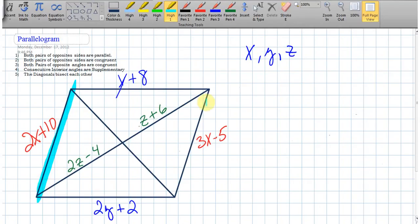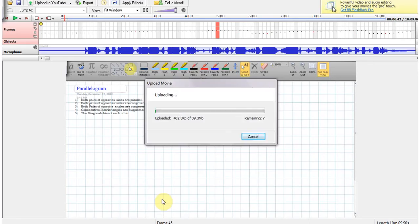Both pairs of opposite sides are going to be congruent. I know those two sides in there are going to be congruent, and I know these two sides are going to be congruent. And so if they're congruent, we can set those expressions equal to one another.